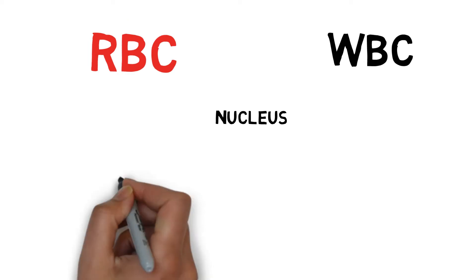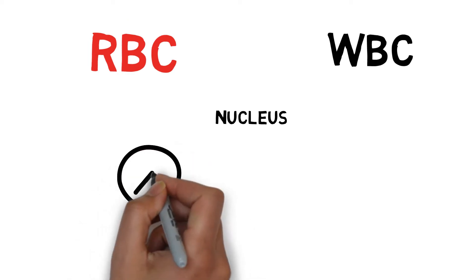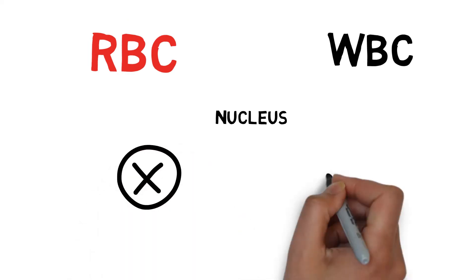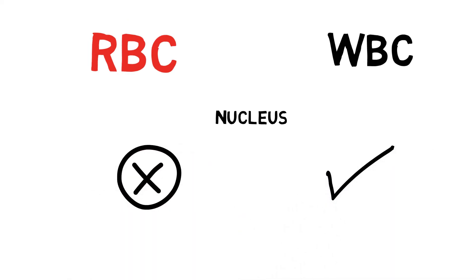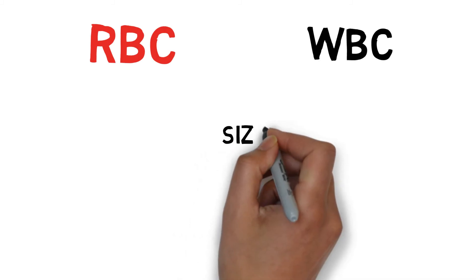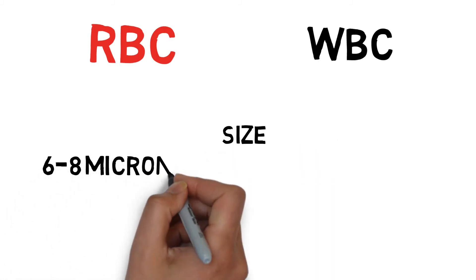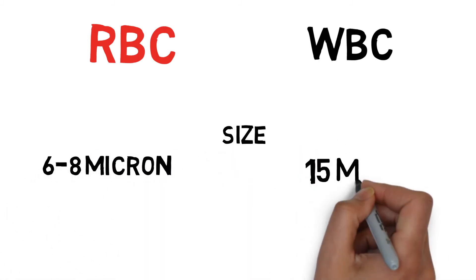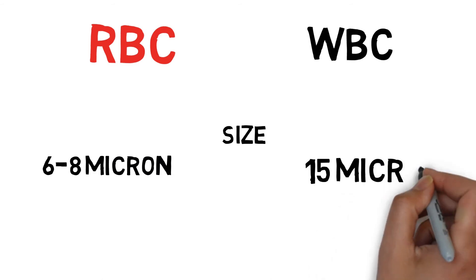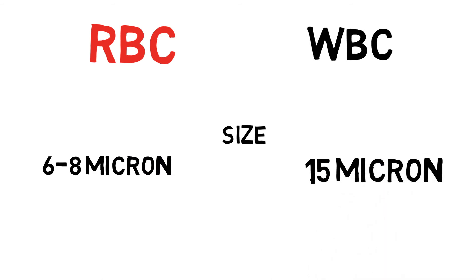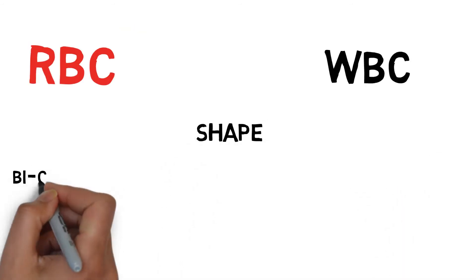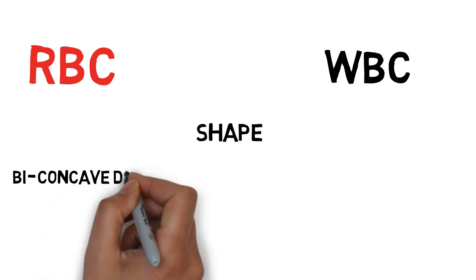Red blood cells do not have a nucleus, but white blood cells are nucleated. The normal size of an RBC is 6 to 8 microns, and the normal size of a WBC is 15 microns.